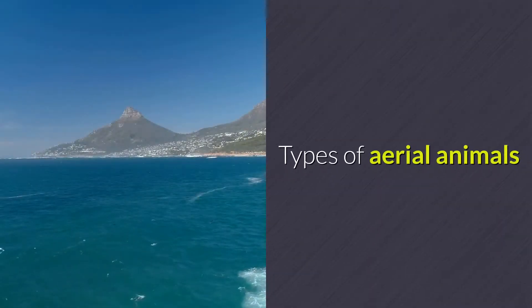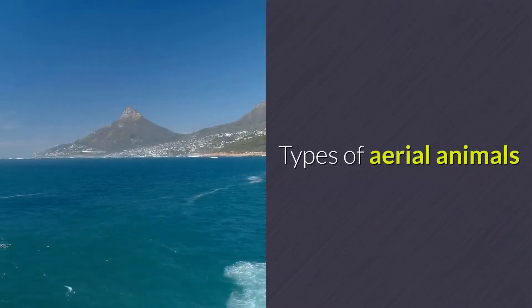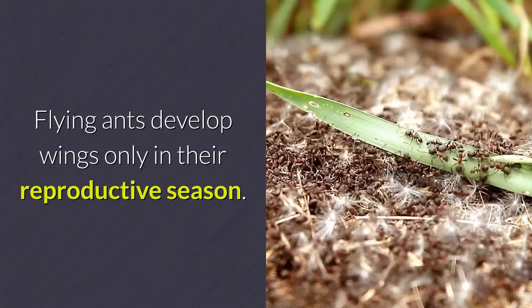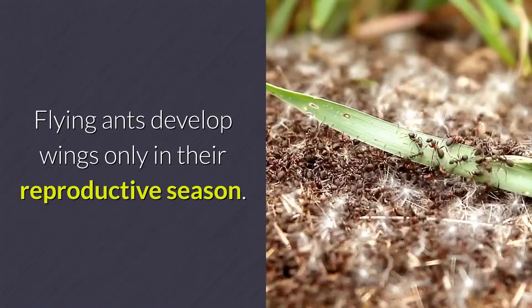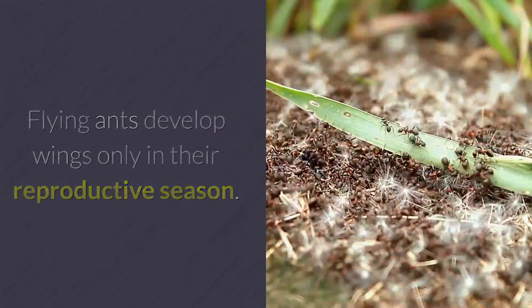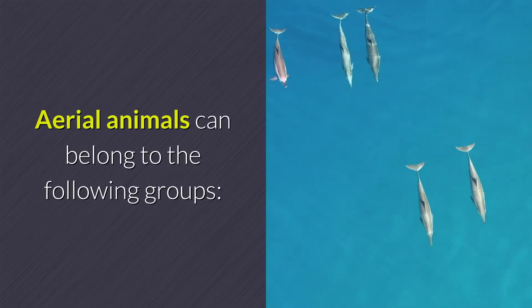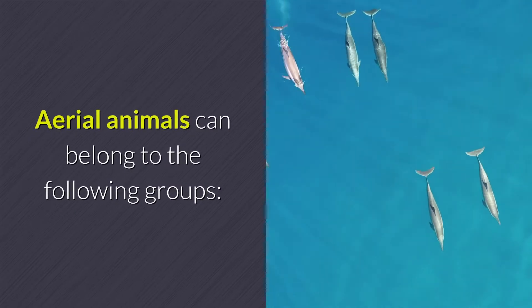Types of aerial animals. Flying ants develop wings only in their reproductive season. Aerial animals can belong to the following groups.